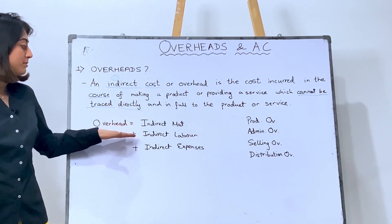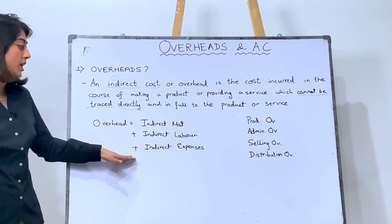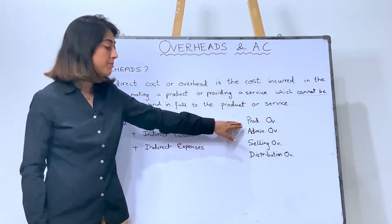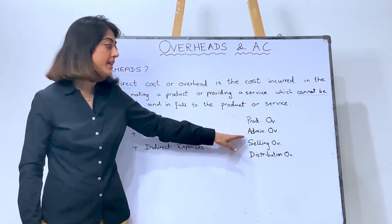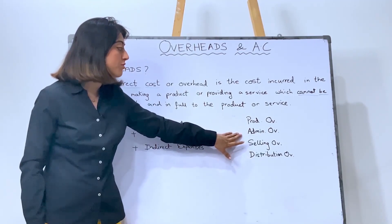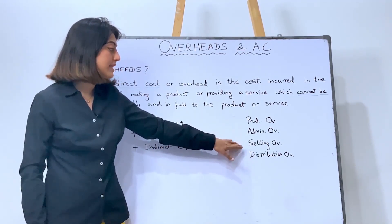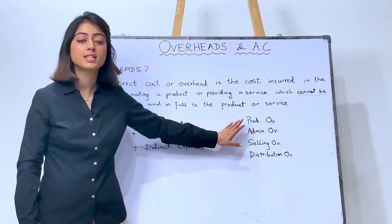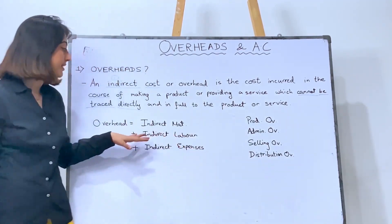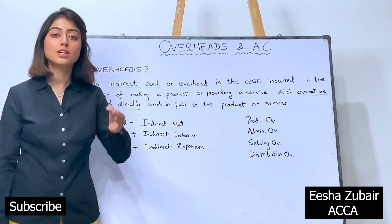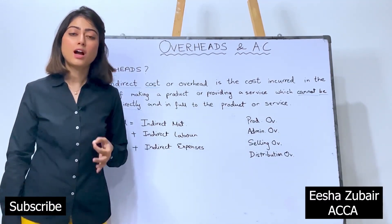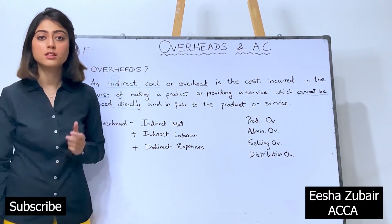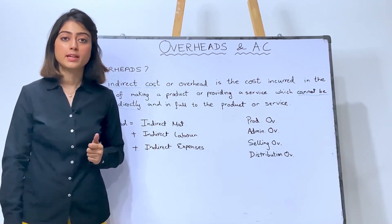Overheads include indirect material, indirect labor, plus indirect expenses — which include production overheads, admin overheads, selling overheads, and distribution overheads. These are all categories of indirect expenses that can be incurred in any firm, organization, or business.